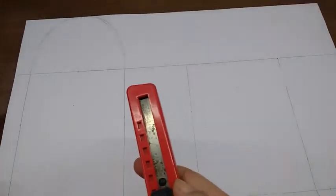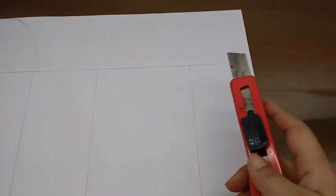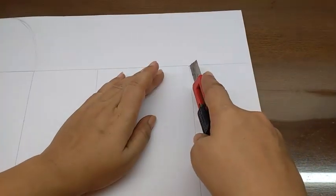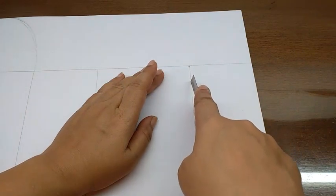Now take a paper knife and on all the straight lines, not on this one, on all the straight lines, just score a bit. Very lightly, just run the knife on it, on the paper.